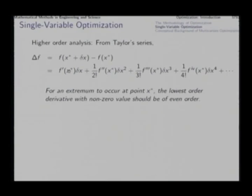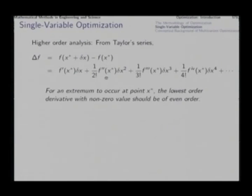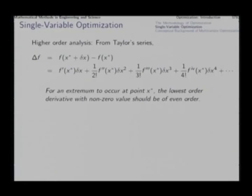If the first derivative vanishes, the series is dominated by the second-order term for sufficiently small Δx. The sign of the second-order term does not depend on the sign of Δx, because Δx appears squared. If the second derivative is positive, neighboring points on both sides have higher function values, qualifying x* as a local minimum. If negative, it is a local maximum.